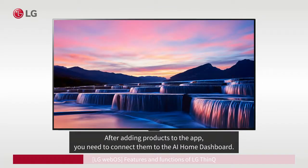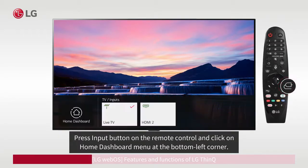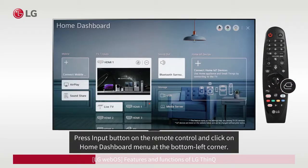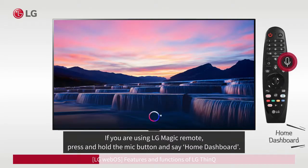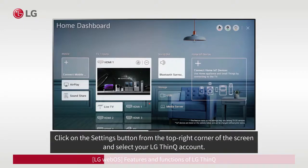After adding products to the app, you need to connect them to the AI Home Dashboard. Connect your LG ThinQ to the AI Home Dashboard. Press the input button on the remote control and click on the Home Dashboard menu at the bottom left corner. If you are using LG Magic Remote, press and hold the mic button and say 'Home Dashboard.' Click on the Settings button from the top right corner of the screen and select your LG ThinQ account.